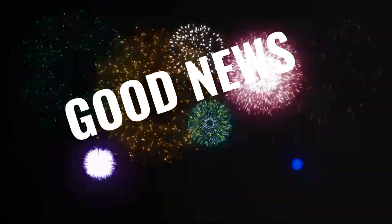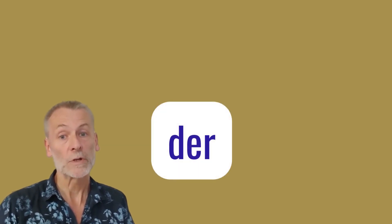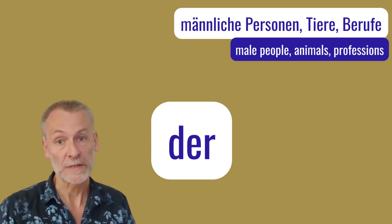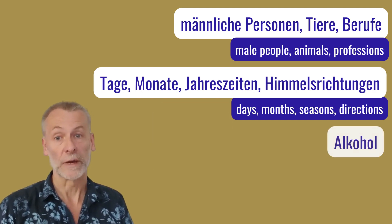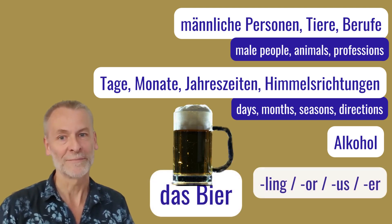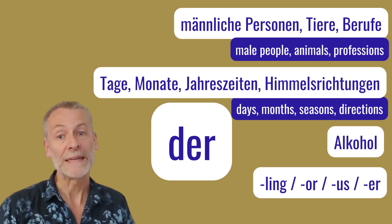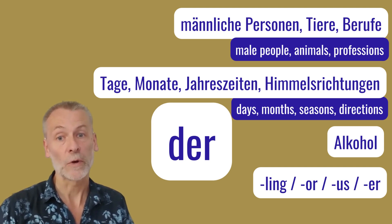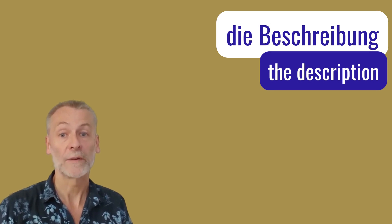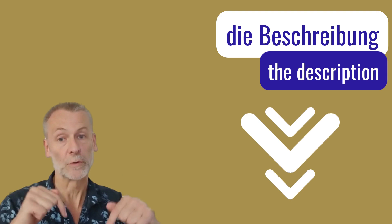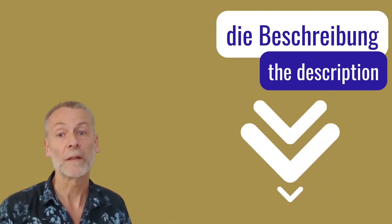Good news number one: there are rules for many nouns, and they cover between 90 and 98% of the relevant nouns, which is quite good. So let's get started with the masculine article, der. We're talking about male people, animals and professions. The days of the week, the months of the year, seasons and directions. Every alcoholic drink is masculine, except das Bier. And we have some word endings that show us that this noun is supposed to be masculine and has the article der. Please keep in mind that these rules and some examples for all the words you can find in the description below, so you can familiarize yourself with them and get a little feeling for that.